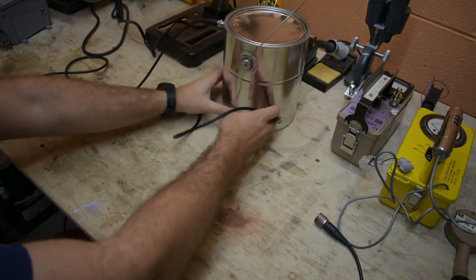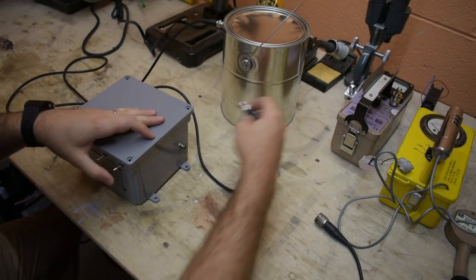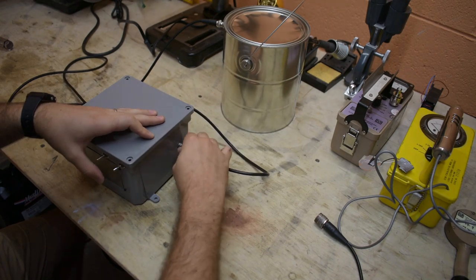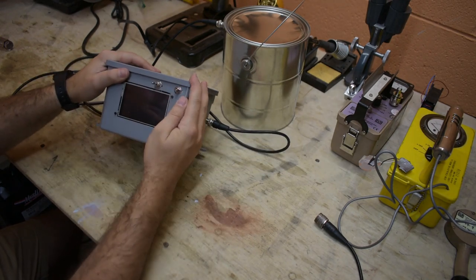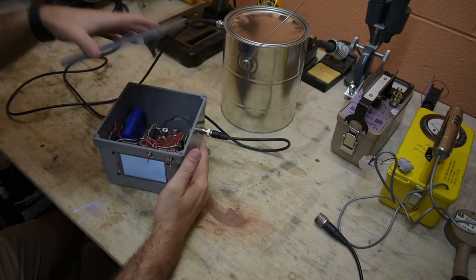The next thing I did was I built this control box for it. So I can go ahead and power this up. It has a BNC connector. This is a high voltage switch and this powers it up. And inside of here is